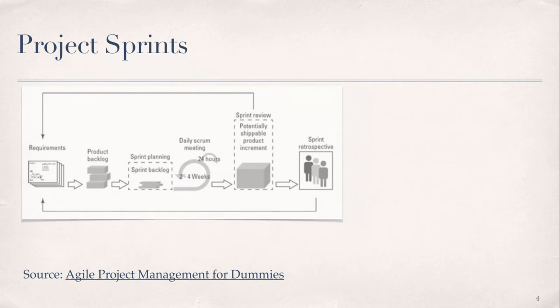Scrum sprints are used in Agile project management to model adaptive, iterative, and incremental design thinking. As we discussed in the presentations and assigned readings in the last module, sprints represent the work that is done in Agile project life cycles via the sprint events, which include sprint planning, daily scrum meetings, sprint review, and sprint retrospective. In addition, sprints facilitate management and administration of two key project artifacts, namely the product backlog and the sprint backlog.